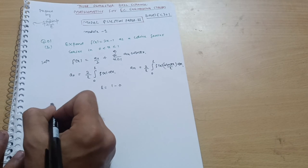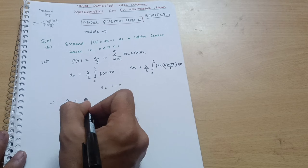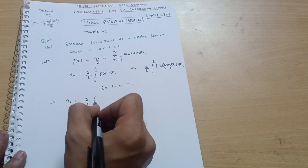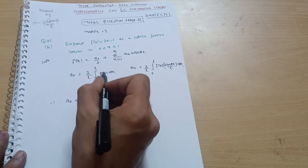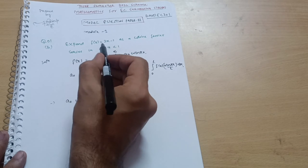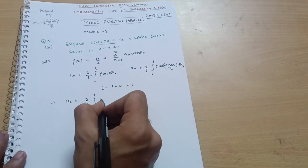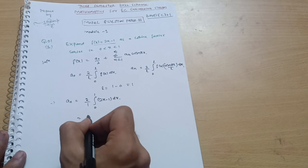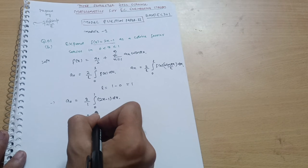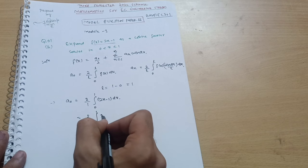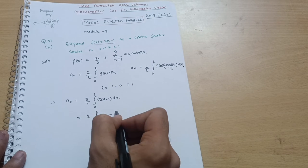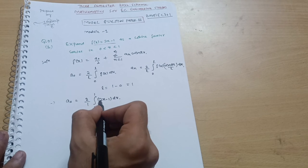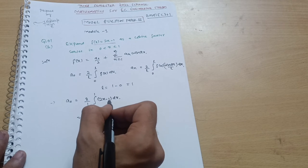Now let us calculate a₀. So a₀ = (2/1) × integral from 0 to 1 of f(x) dx. The function f(x) = 2x − 1, so a₀ = 2 × integral from 0 to 1 of (2x − 1) dx. I am breaking it into two parts: integrating 2x and then 1 dx separately.